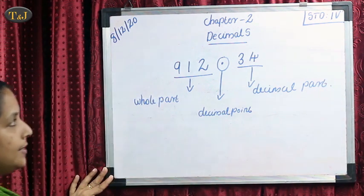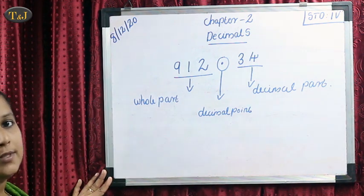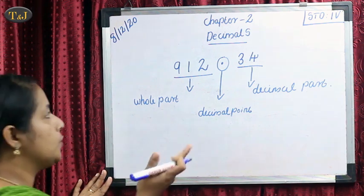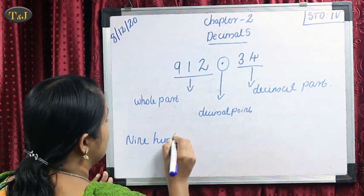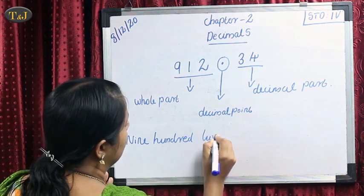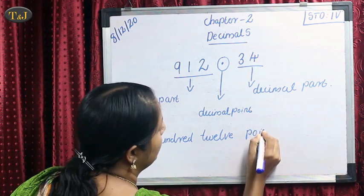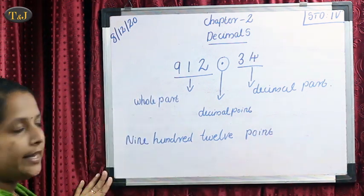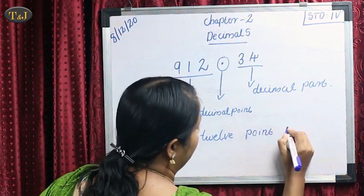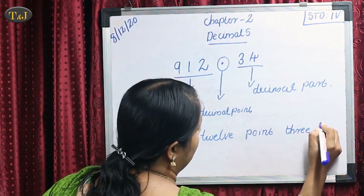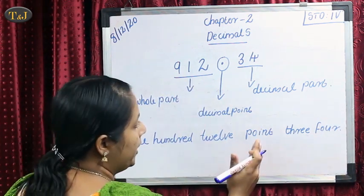How do we read this number? Before the point, we read the number as a whole part — that means this number is 912. So we write 912, then put the dot as a point. After the point, we do not read the number as 34; we read the number as single digits. So our number is read as 912.34.